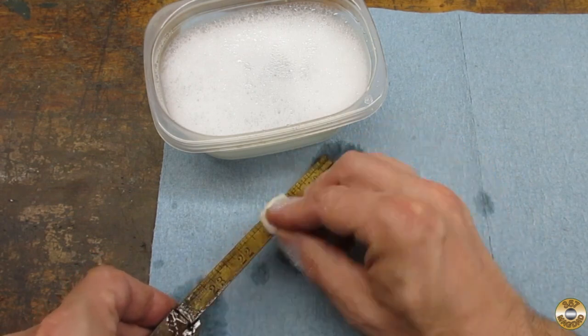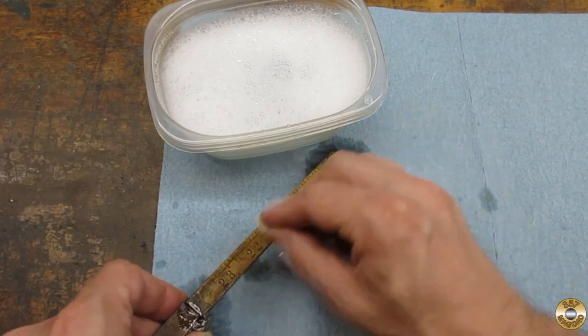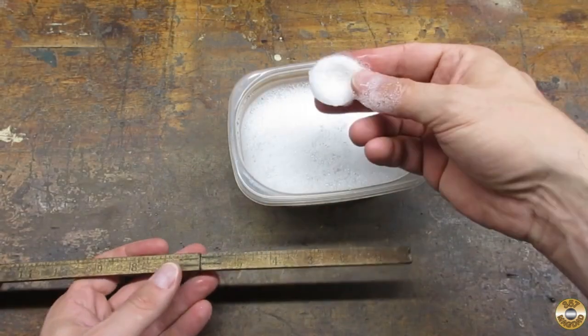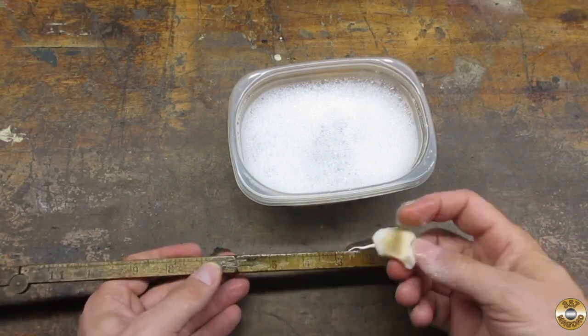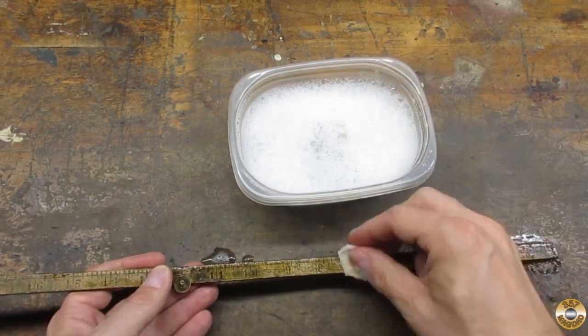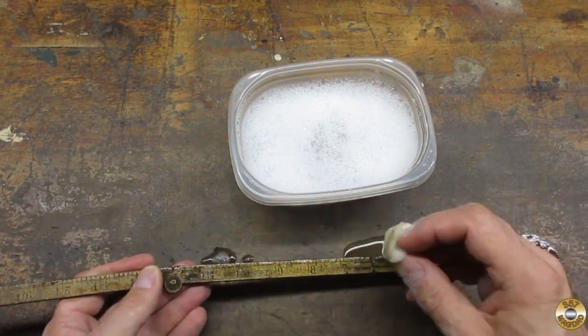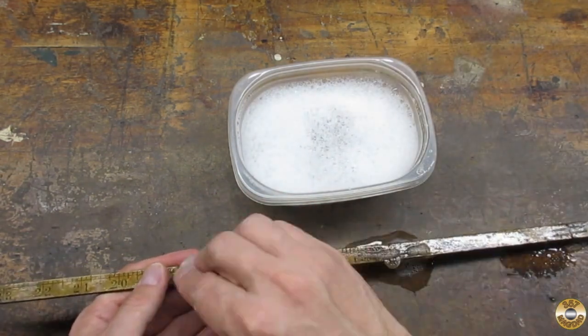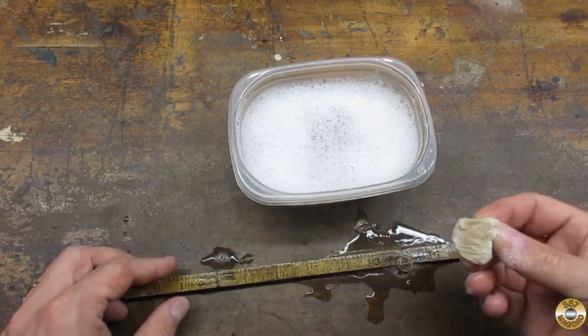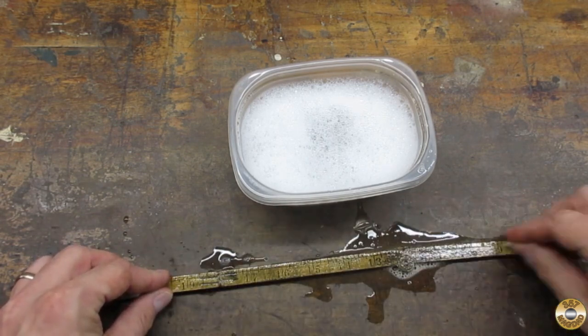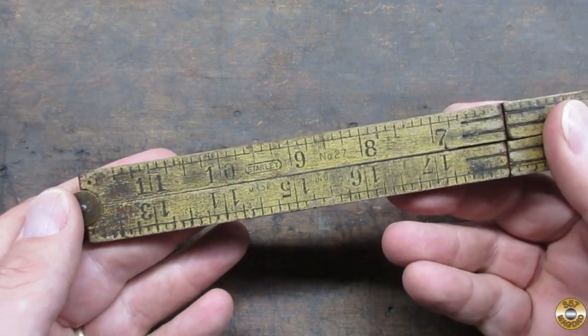The soapy water didn't seem to remove any more dirt, but it also didn't seem to affect the markings and numbers. I went ahead and washed the entire ruler with the soapy water and cotton balls. Here's the ruler after its bath. It looked a little better.